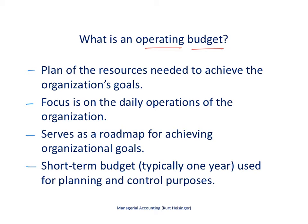So what is an operating budget? It's a plan of the resources that we need as an organization to achieve our goals. It's typically prepared in advance of the upcoming month, quarter, or year — typically within a year — and it shows us what we need to do to achieve our goals. The focus is on the daily operations of the organization.